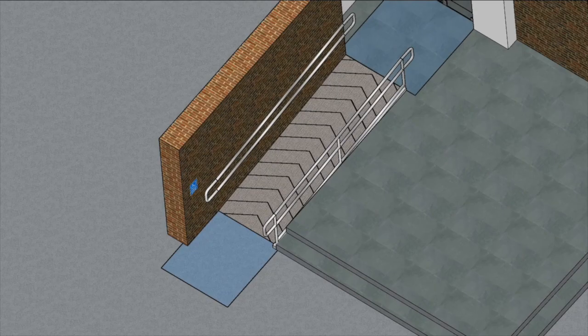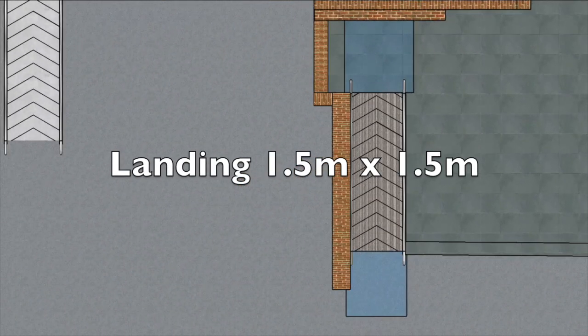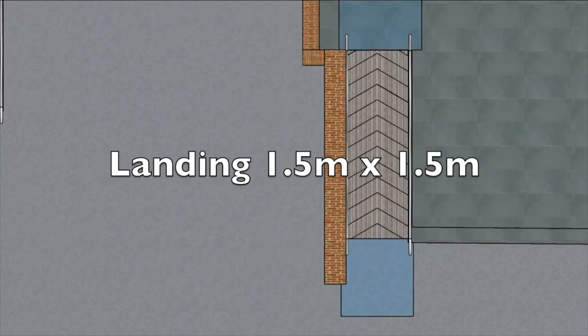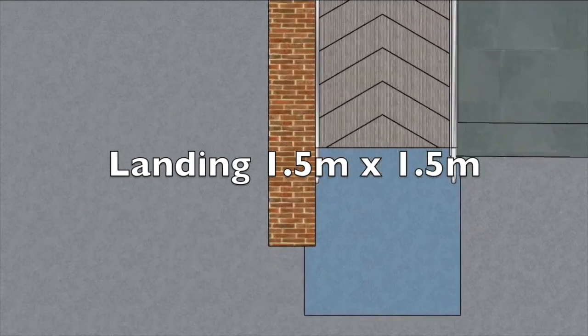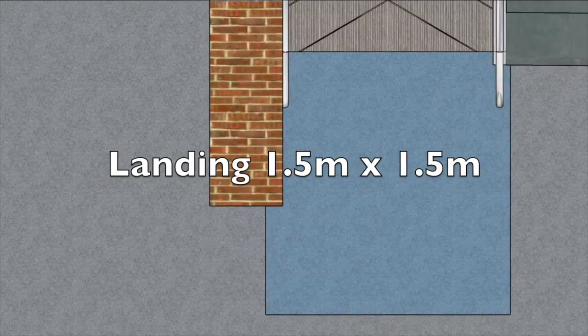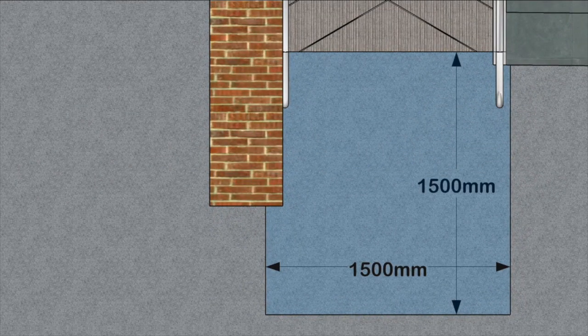Ramp landings. At the top and the bottom of any ramp there should be a clear area — a landing — where the wheelchair user can manoeuvre onto or off the ramp. The minimum dimension is 1500 by 1500 millimetres.